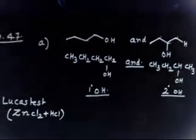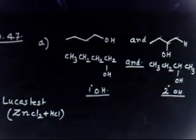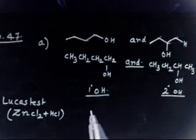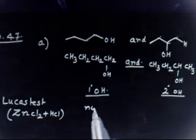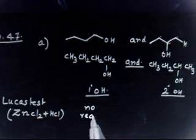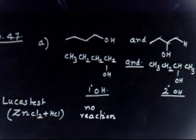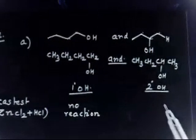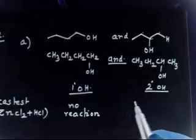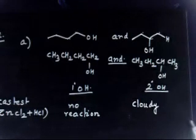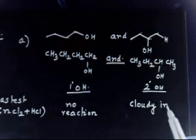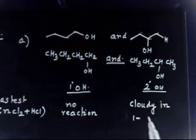Using Lucas reagent (ZnCl₂ + HCl): a primary alcohol does not react at all — no reaction. A secondary alcohol gives a positive Lucas test in one to five minutes — the solution becomes cloudy, forming a cloudy precipitate. It takes around one to five minutes.